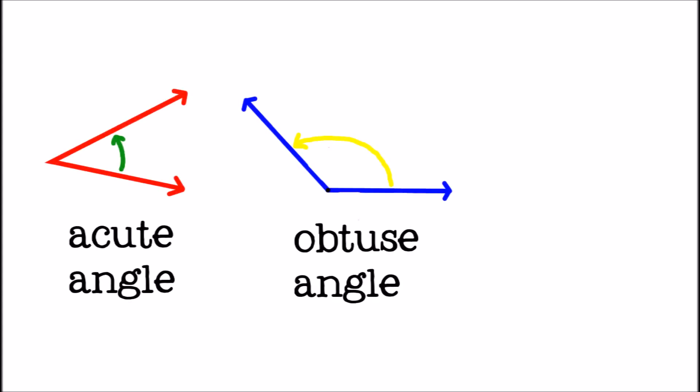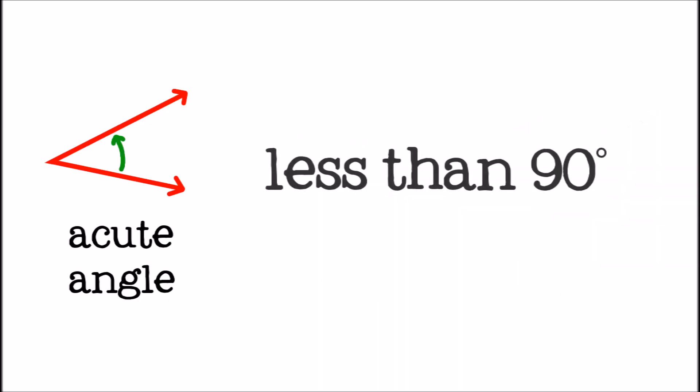There are three other types of angles: acute, obtuse, and reflex angles. An acute angle is one that is less than 90 degrees.